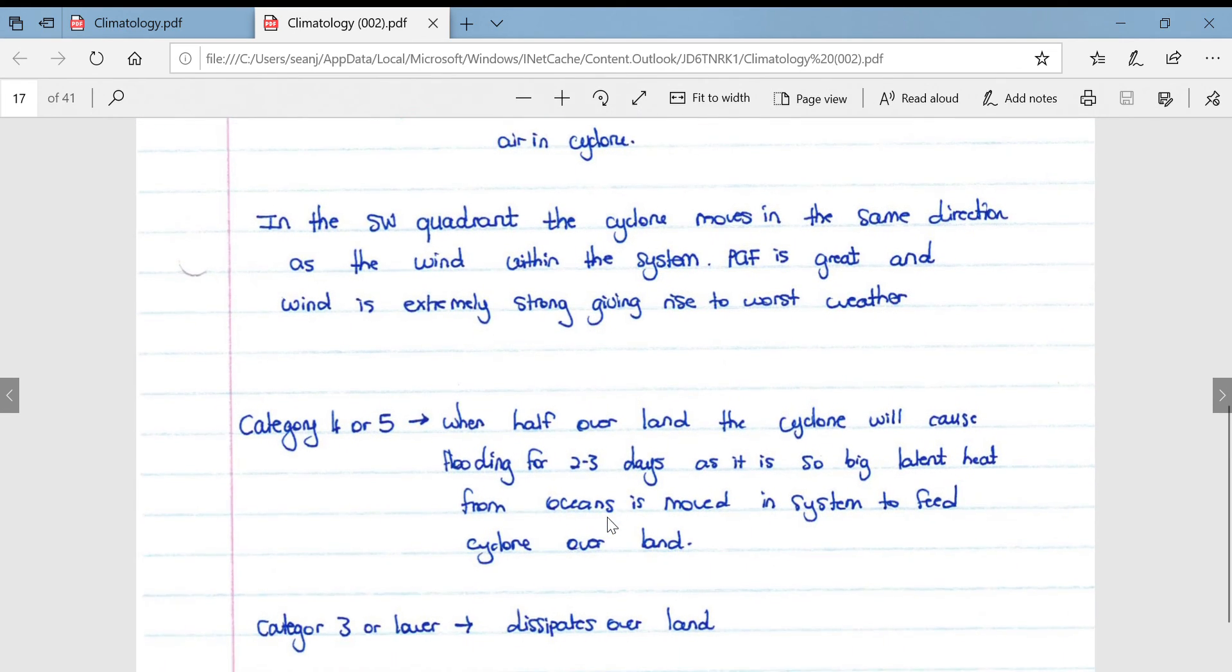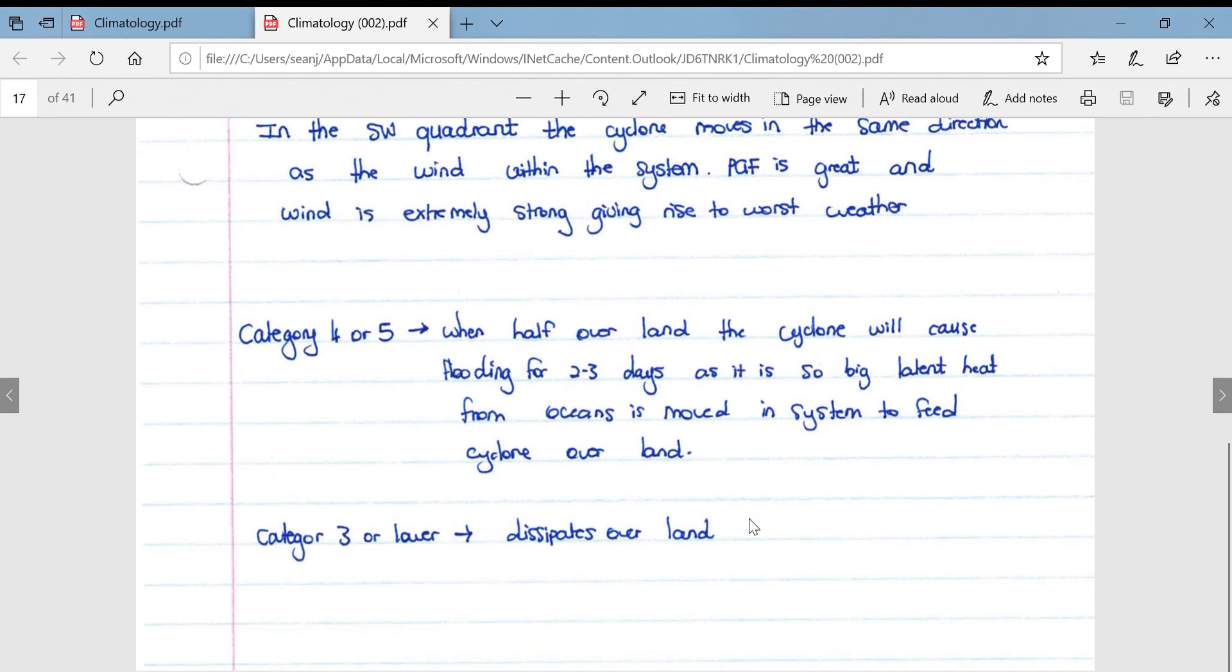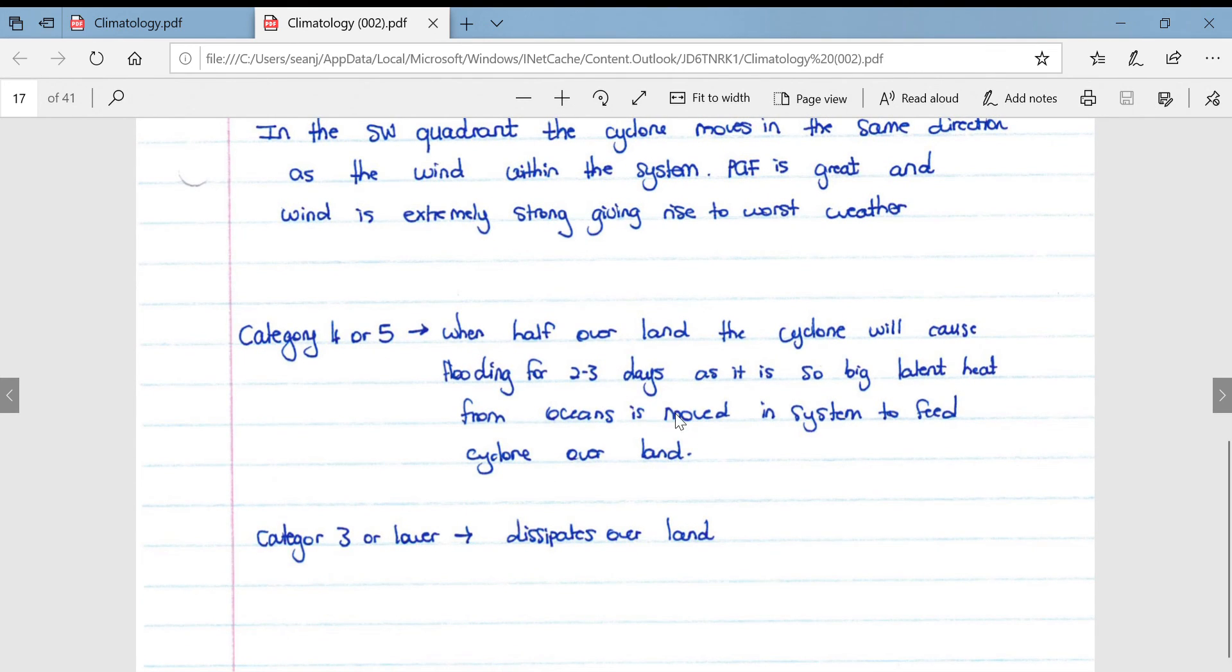A category four or five cyclone when half over the land, the cyclone will cause flooding for two to three days as it is so big that the latent heat from the oceans is moved into the system to feed the cyclone over the land. And that goes back to that regenerating stage that could take place that I mentioned earlier. In a category three cyclone or lower, it'll definitely dissipate on immediate contact with the land.